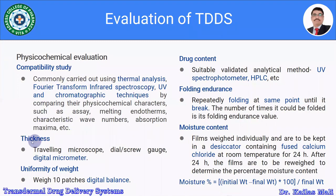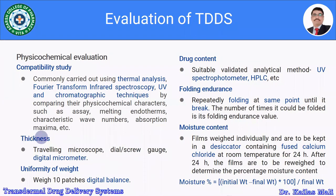Thickness of the patch needs to be measured; the patch should have uniform thickness, otherwise there may be variation in weight as well as drug content. It is measured using a traveling microscope, dial screw gauge, or digital micrometer. The digital micrometer is widely used. If variation in thickness is observed, the manufacturing technique needs to be optimized.